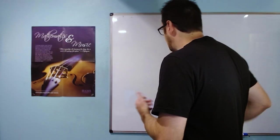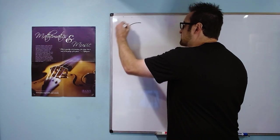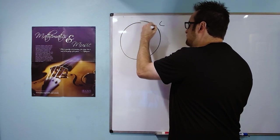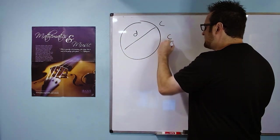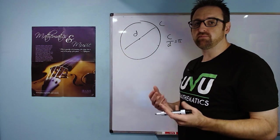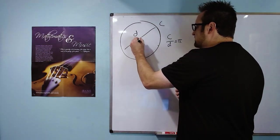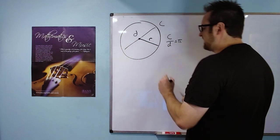And he started an international debate about whether or not pi is the right circle constant to use. You see, pi is the ratio of a circle's circumference to its diameter. So c over d equals pi. But Bob argued that what's really fundamental about a circle is its radius, not its diameter.